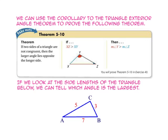We can use the corollary to the triangle exterior angle theorem to prove the following theorem: if two sides of a triangle are not congruent, then the larger angle lies opposite the longer side. So if the length of segment XZ is greater than the length of segment XY, then the measure of angle Y is greater than the measure of angle Z. If we look at the side lengths of the triangle, since side AB is the longest side, angle C is the largest. Since side CB is the shortest side, the measure of angle A would be the smallest angle.